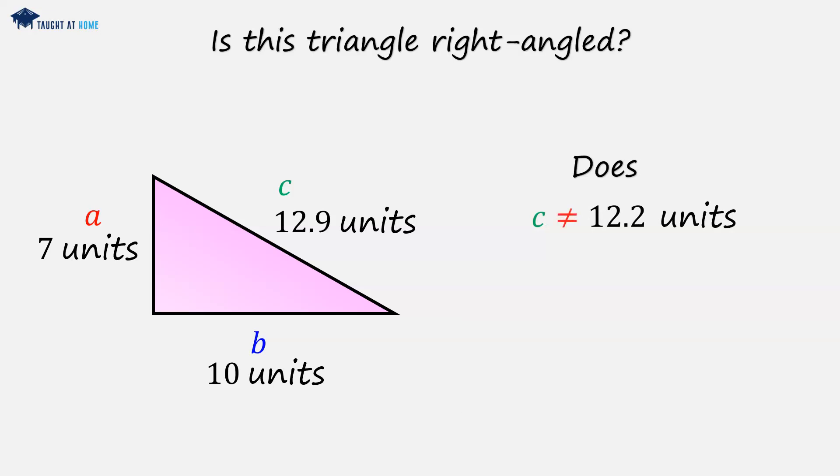Here we can see that c does not equal 12.2 units, it equals 12.9 units. So therefore, it is not right angled.